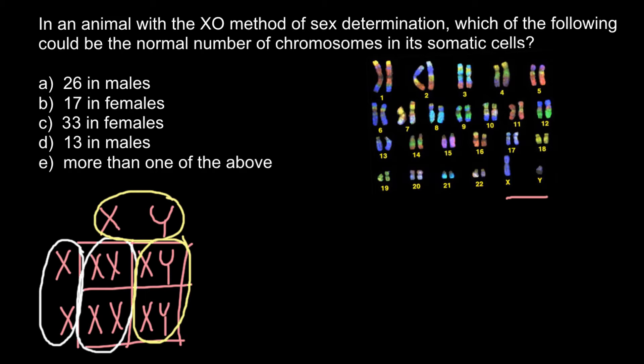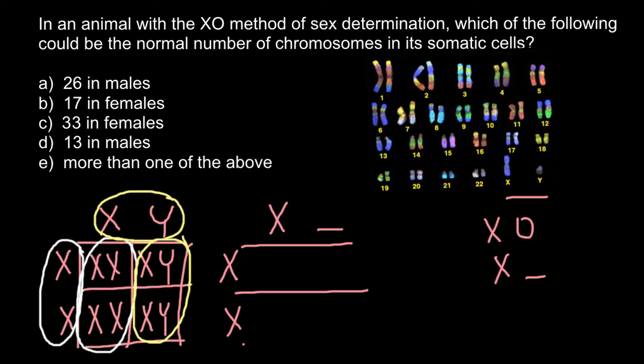Now let's look at how sex determination works in the XO system. The 'O' stands for the absence of a chromosome — we can also write it as X0, or X with an empty space. Males in this system are missing one sex chromosome, so males would be X and empty space, while females would be XX.